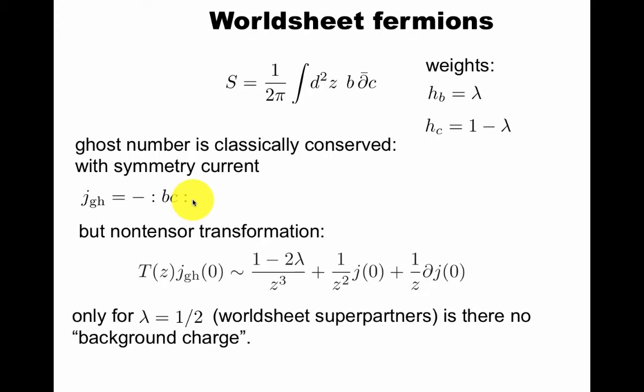Now this action has a symmetry that j is minus bc. It's classically conserved. It just counts number of particles. So it's like the electric charge in QED. This current has a non-tensor transformation property if lambda is not equal to one half. So we'll get back to this later. This means that just like t itself, the ghost current does not transform simply under conformal transformations such as z goes to one over z.